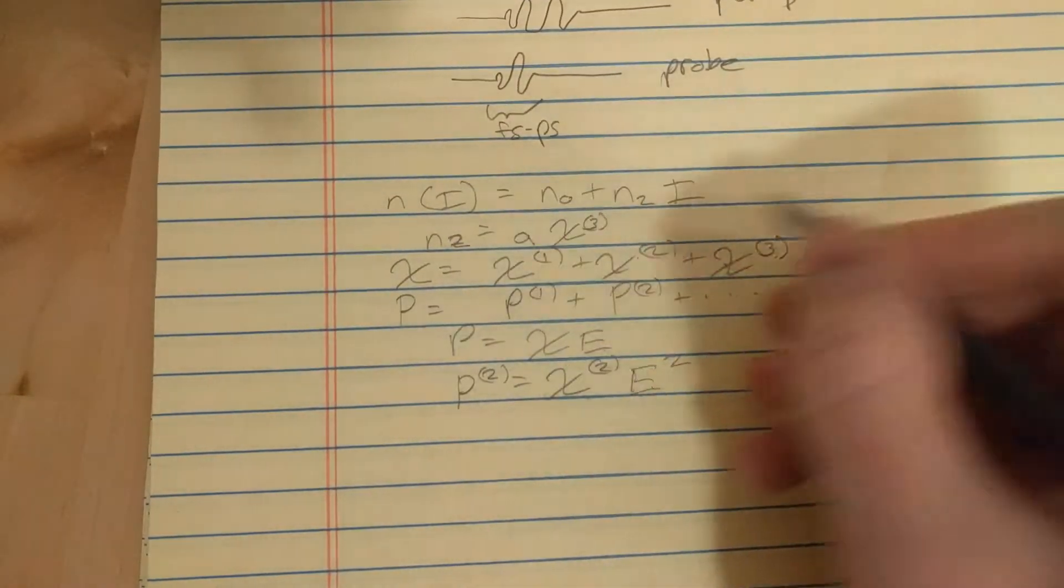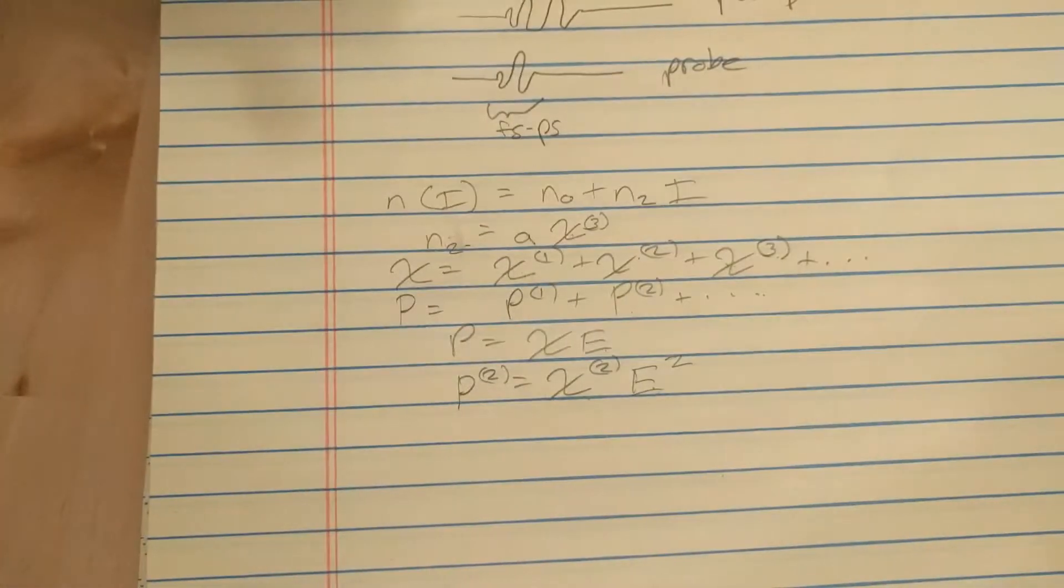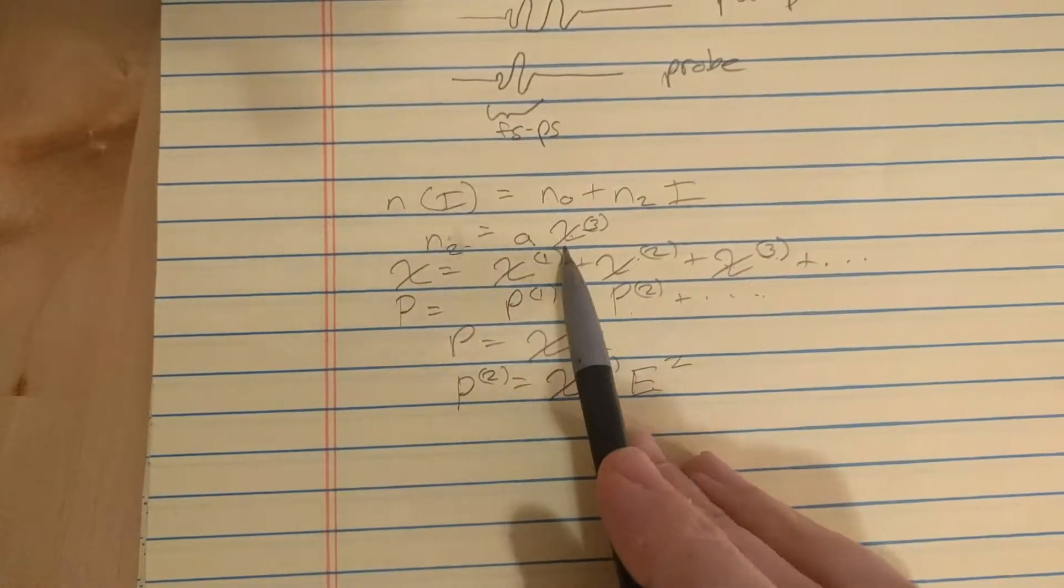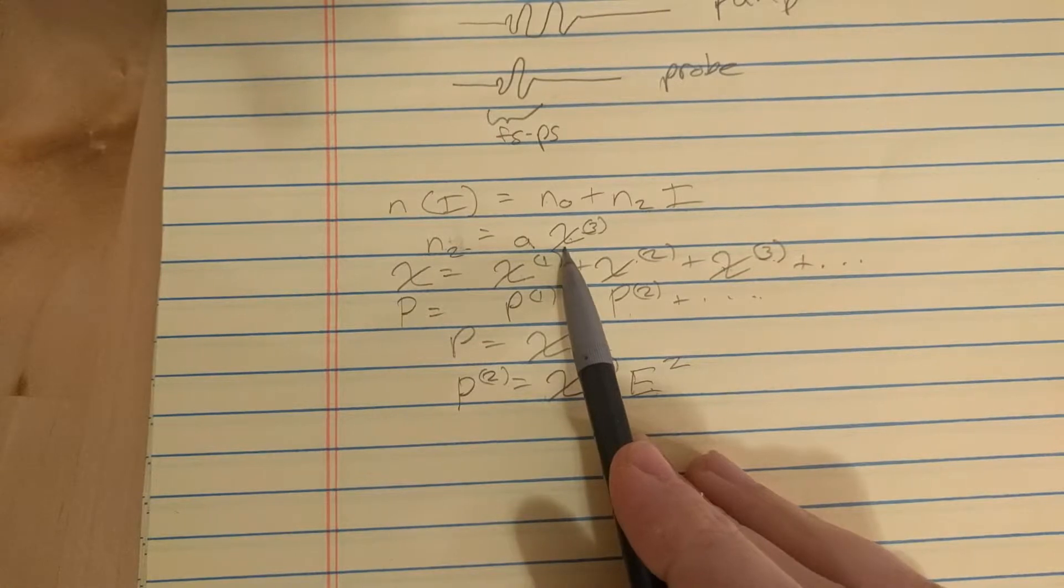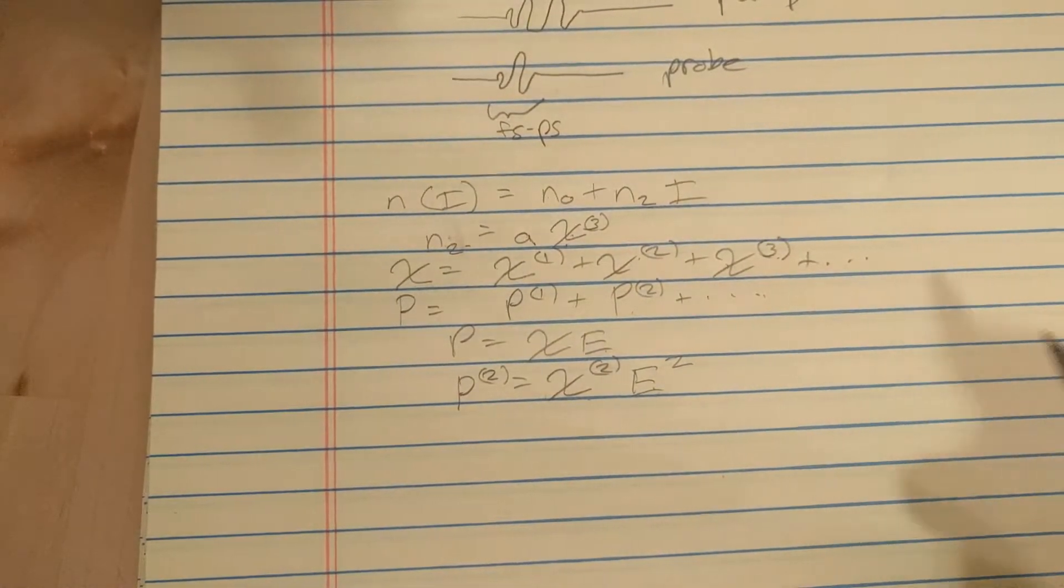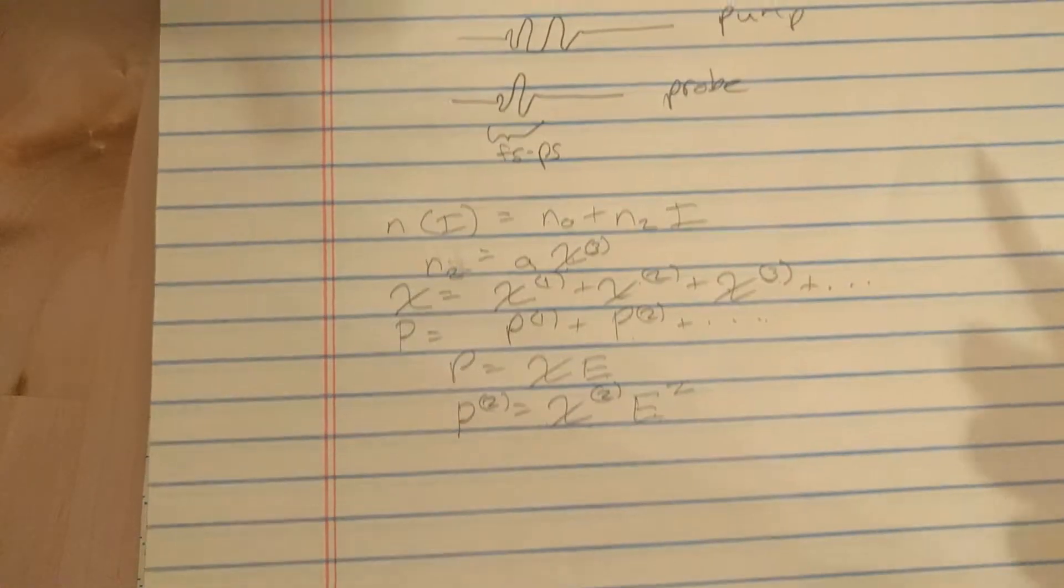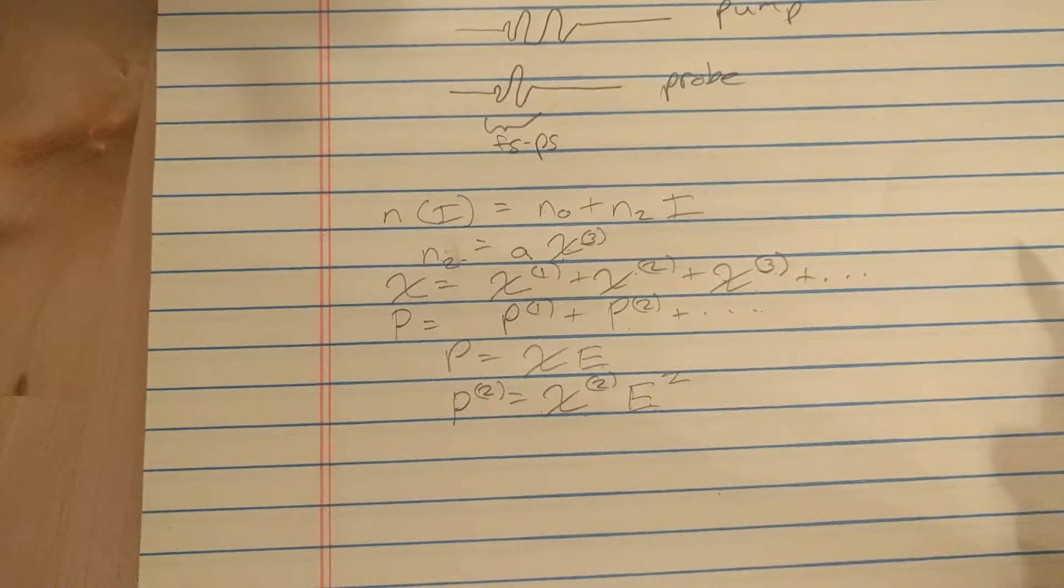N2, that's a 2, sub 2, equals some constant times chi3. And chi3 is very small usually because else we would have seen nonlinear optical phenomena before lasers were invented. But they were only seen when lasers were invented because lasers concentrate light down into a small space.